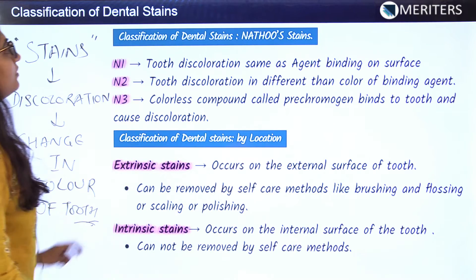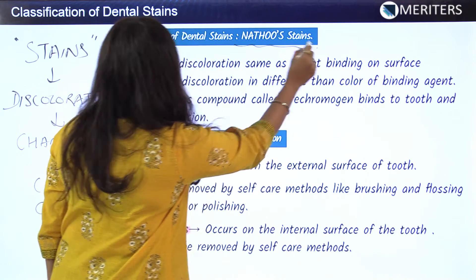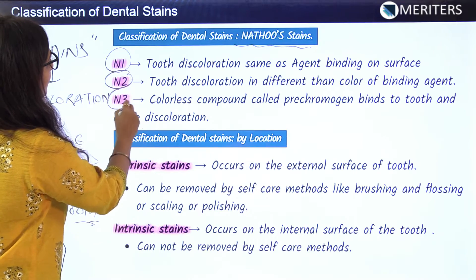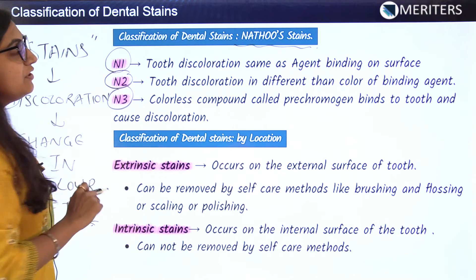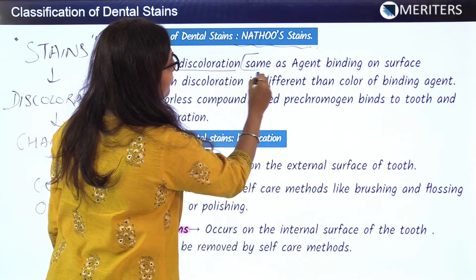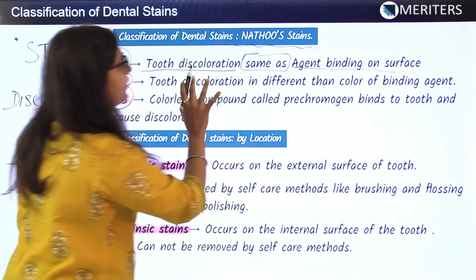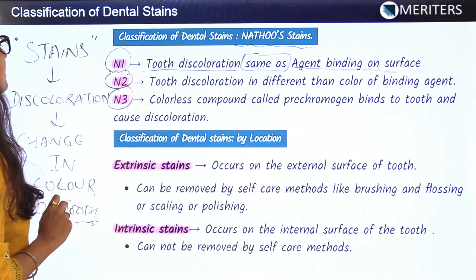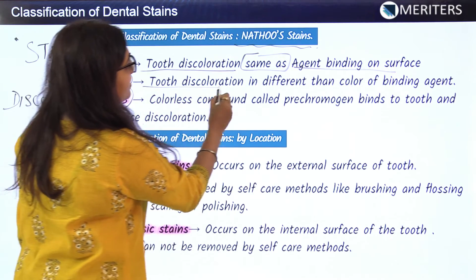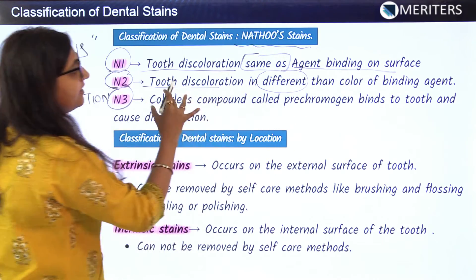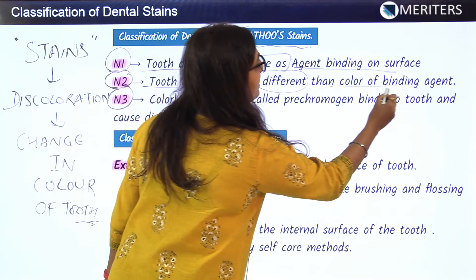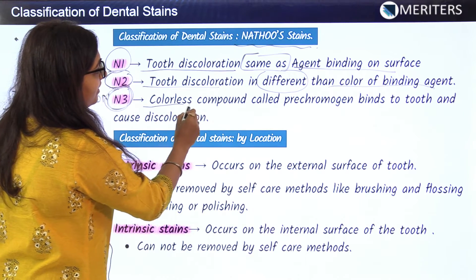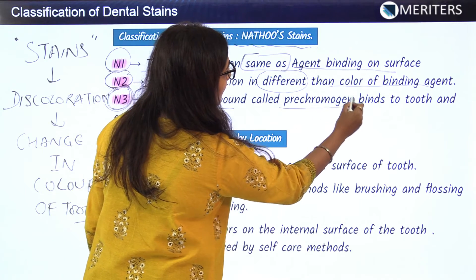Classification of dental stains was divided into three categories: N1, N2, and N3. N1 shows that tooth discoloration is the same as the agent binding on the surface — the color of the tooth is the same as that of the agent. N2 is where the tooth discoloration is different — the agent and the discoloration are different from the color of the binding agent.